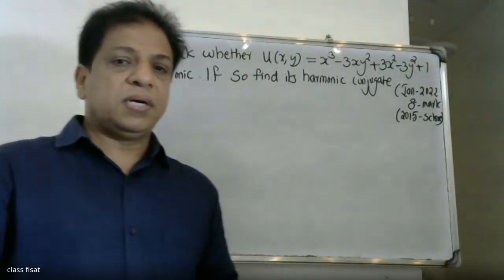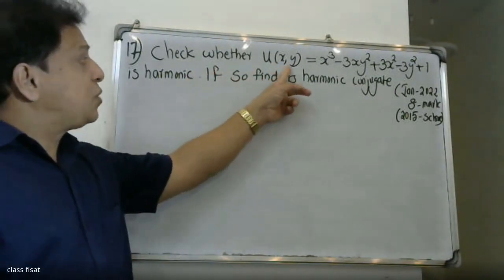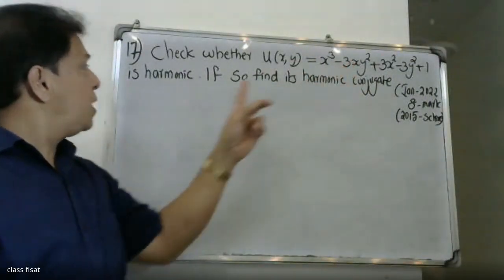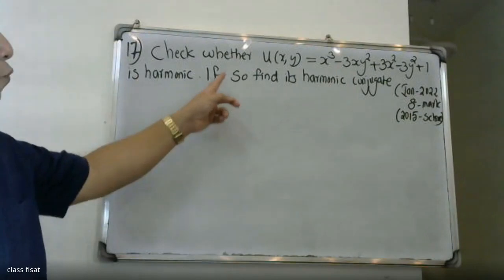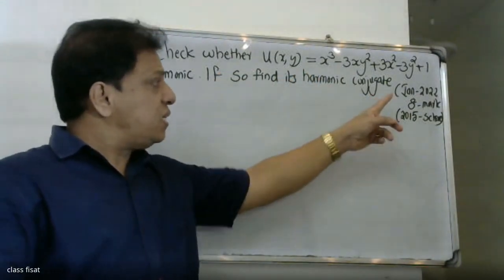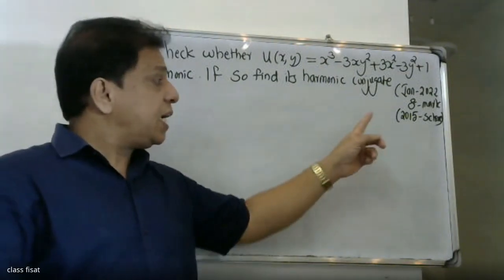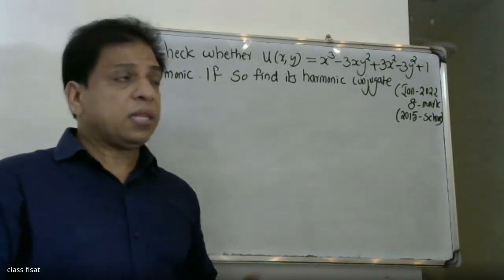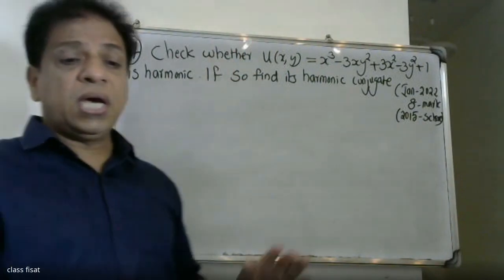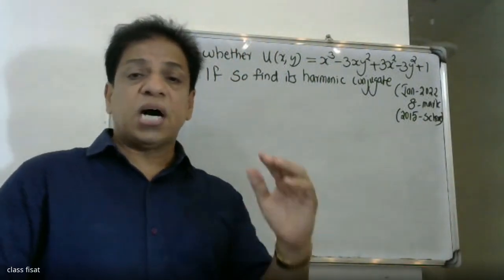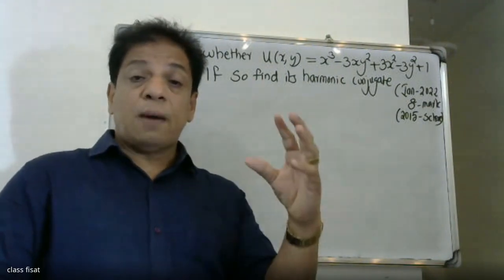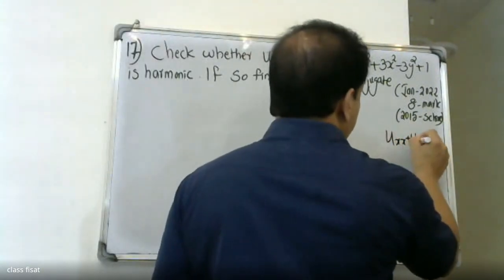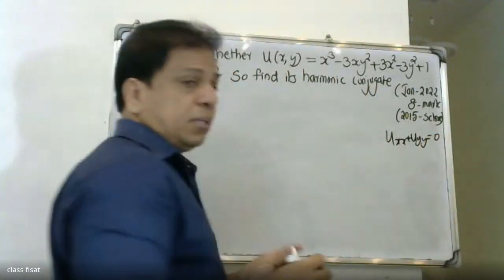Good morning students. The question is: check whether u(x,y) = x³ - 3xy² + 3x² - 3y² + 1 is harmonic. If so, find its harmonic conjugate. A function u(x,y) is harmonic if it satisfies the Laplace equation: uxx plus uyy equals zero.